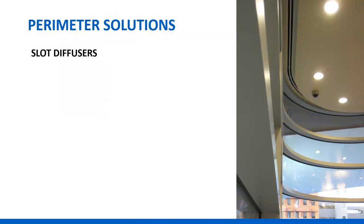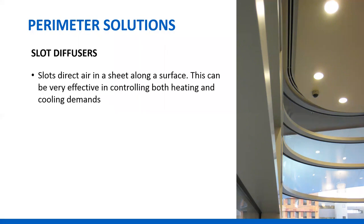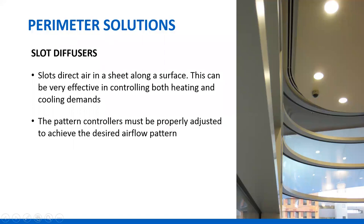Slot diffusers are the most common solution at the perimeter. Linear slot diffusers work best because they direct all the air where you need it — either at the window or into the adjacent perimeter zone. Slots direct air in a sheet, typically along a surface, which has advantages for avoiding inadvertent drop from cold air along the ceiling. However, slot diffusers have to be adjusted. The question comes up: whose job is it to adjust the pattern controller in a linear slot diffuser?